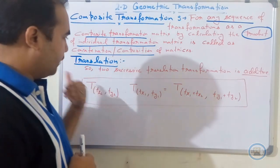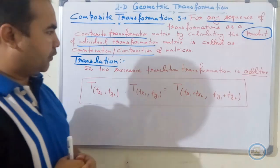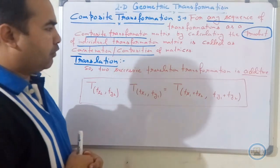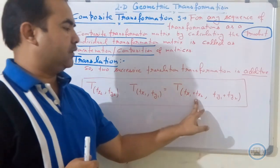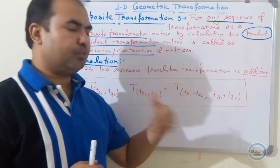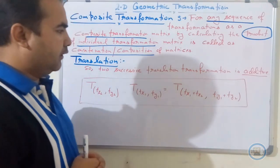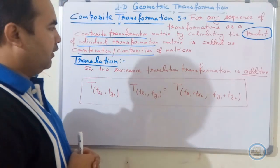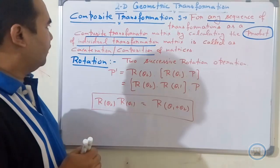If you are having more than two or three translation operations simultaneously, you simply extend this: tx1 plus tx2 plus tx3 plus tx4, and so on. In this way you can perform multiple successive translation operations.